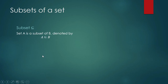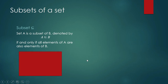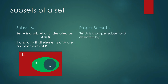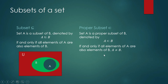Subsets of a set: A is a subset of B, denoted by this symbol, if and only if all elements of A are also elements of B — A is contained in B. Proper subset: set A is a proper subset of B if and only if all elements of A are also elements of B, but A is not equal to B. The analog in real numbers is like the relation of inequality.